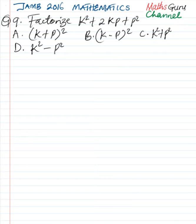Question number nine. Factorize k square plus 2kp plus p square.